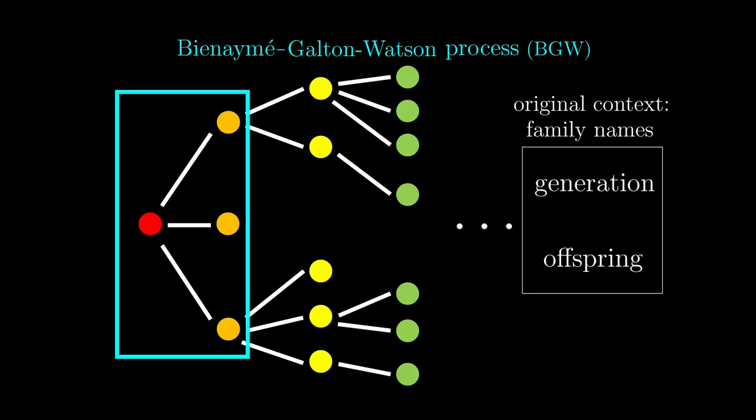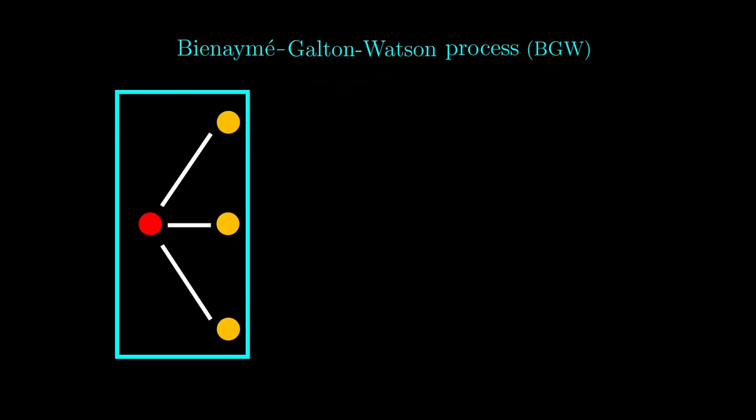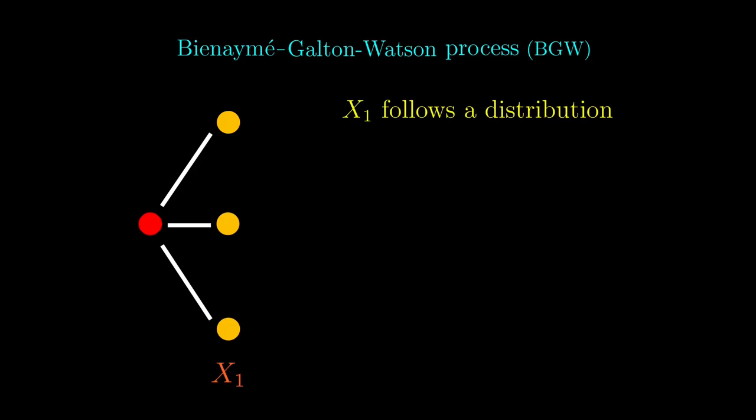Let's focus on the first branching here. We say that this is a random process, so actually it could stop branching right away, or branch to one individual, or two, or three, and so on. Because the number of branches is just x1, the number of offspring of this first patient, we say that x1 follows a distribution.